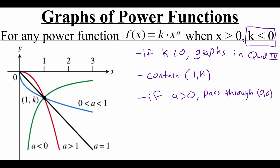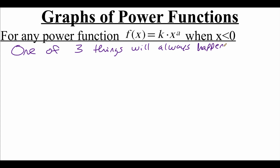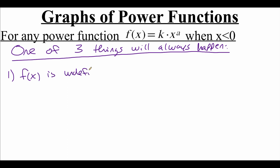All of that holds true when our x values are positive. But things get a little trickier when our x values are negative. So if we're still dealing with a power function f of x equals k times x to the a, but with x values that are less than zero, then one of three things needs to happen. The first thing that could happen is that our function might be undefined for negative x values. For example, if our function was f of x equals x to the one-half power — a one-half power means the same thing as a square root — we know that we're not allowed to square root negative numbers. So we also can't raise negative numbers to a one-half power; that would be an undefined value.